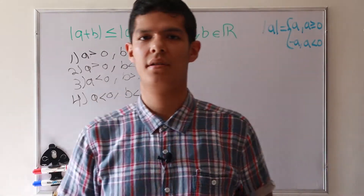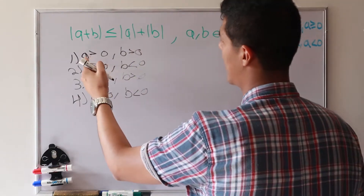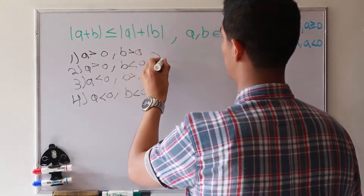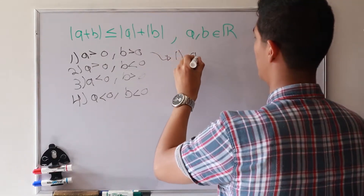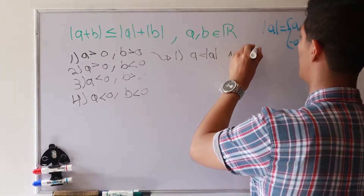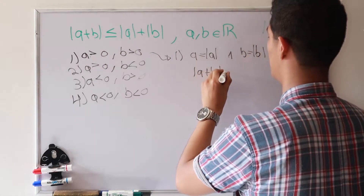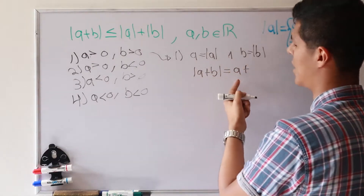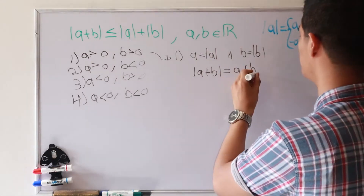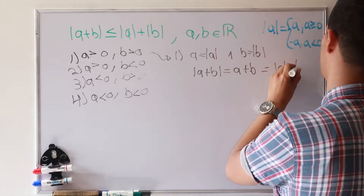There are four cases and the easy ones are cases one and four. When a is greater than zero and b is greater than zero, we have that a equals the absolute value of a and b equals the absolute value of b. So the absolute value of a plus the absolute value of b equals the absolute value of a plus b, because they are positive.